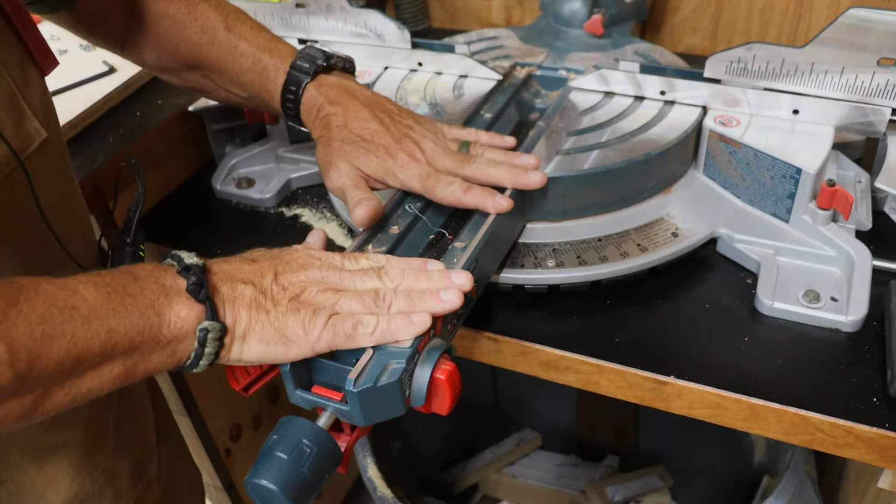With all the screws out, I can simply just pull out the inserts. Now this is a fairly new miter saw and you can already see all the debris that's inside it. And I've just barely used it. So I'm going to go ahead and clean up the inside of this. And then I'm going to use some tape to make a template for the zero clearance insert that we're going to put in.